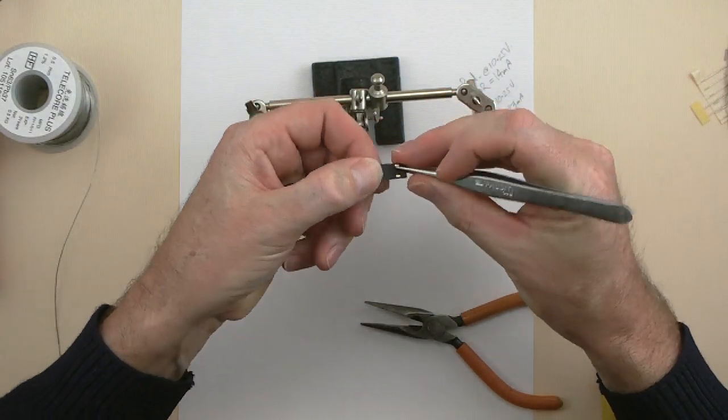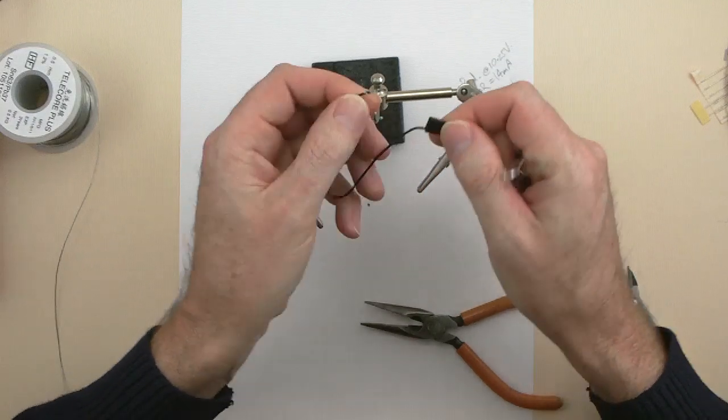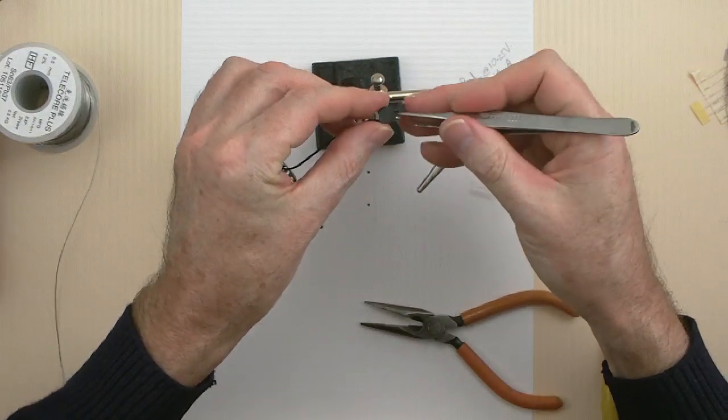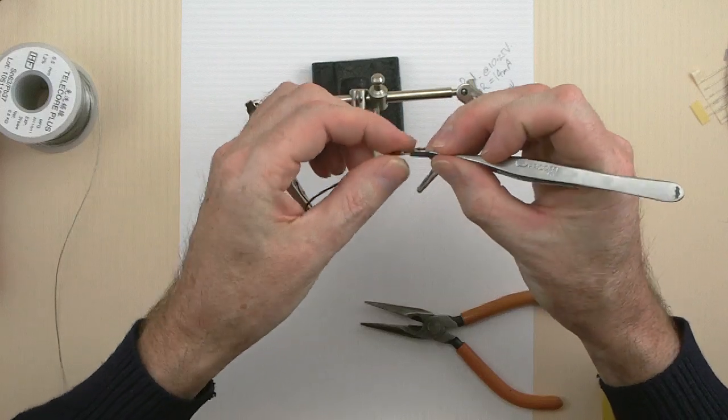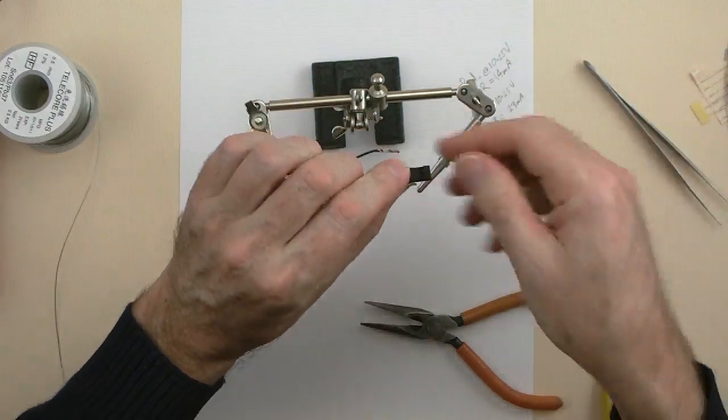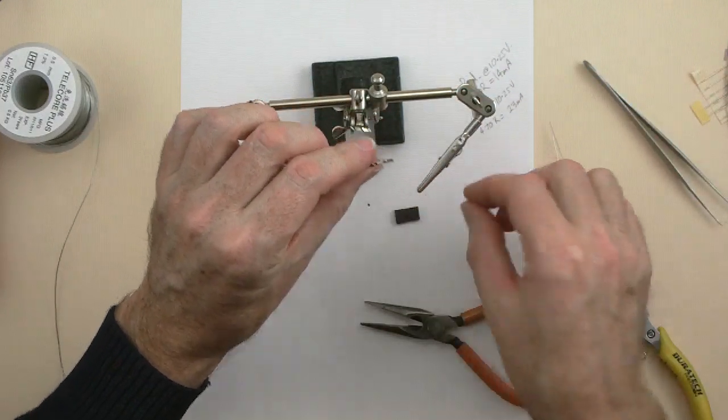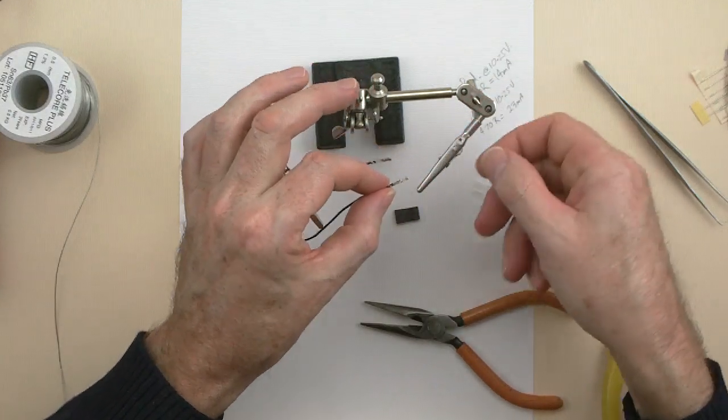So first we take the connectors out of the bind plug. Don't want to lift the little tabs too far or they might break off. Right, here's our plug. It goes that way up. Connectors go that way up.